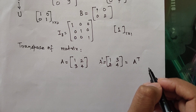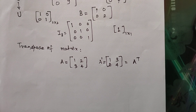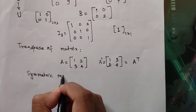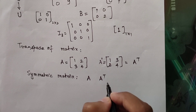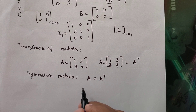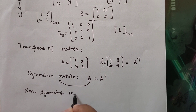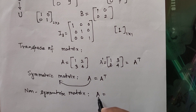We can also talk about symmetric and non-symmetric matrices. What is a symmetric matrix? If we have a matrix A and its transpose A^T, and if A equals A^T, then we say that matrix A is a symmetric matrix. Likewise, a matrix A is said to be a non-symmetric matrix if the matrix equals the negation of its transpose.